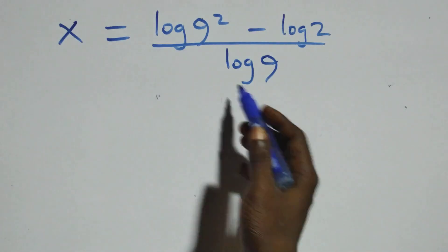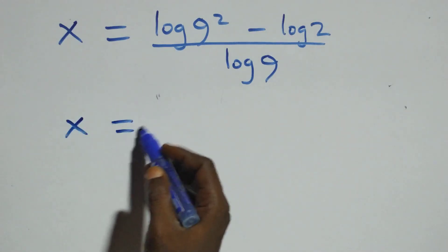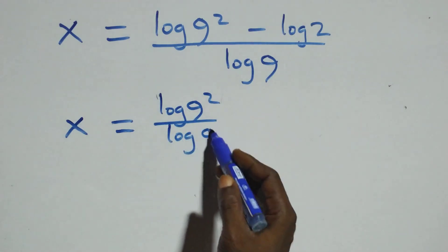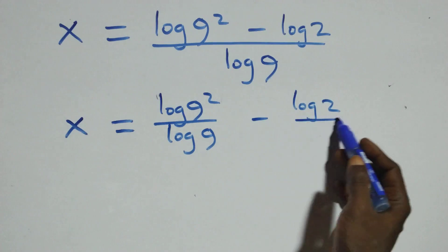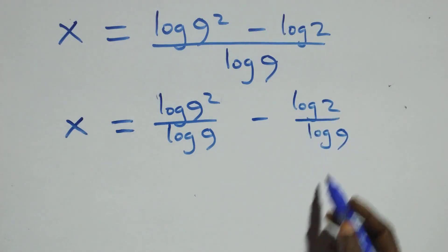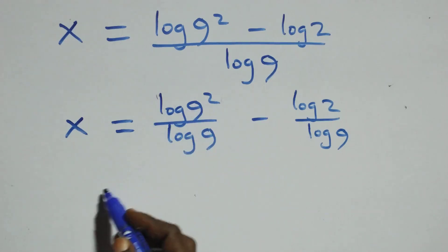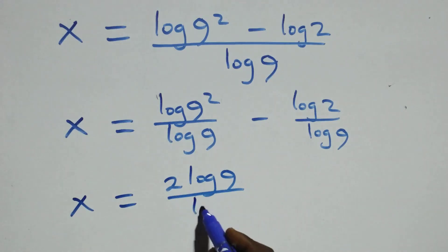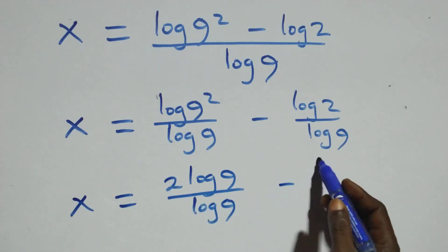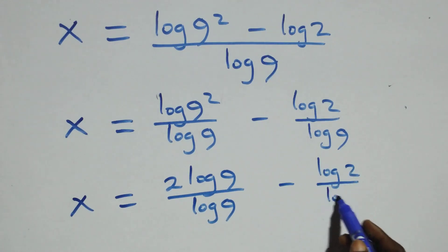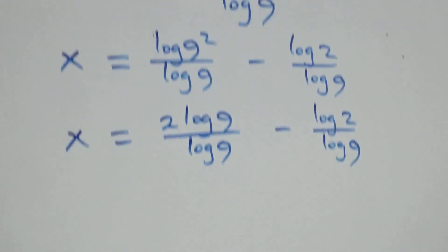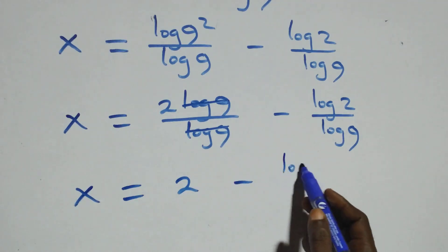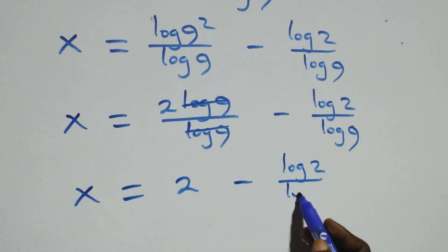We separate this into two fractions: x equals log 9 squared over log 9 minus log 2 over log 9. We then apply the power rule of logarithms — the 2 comes down — so this becomes x equals 2 log 9 over log 9 minus log 2 over log 9. Since log 9 cancels, we get x equals 2 minus log 2 over log 9.